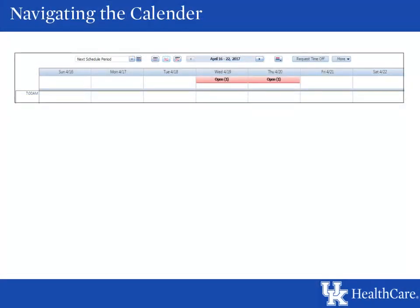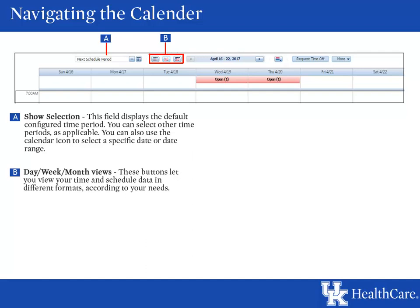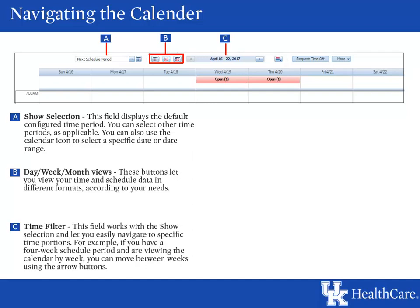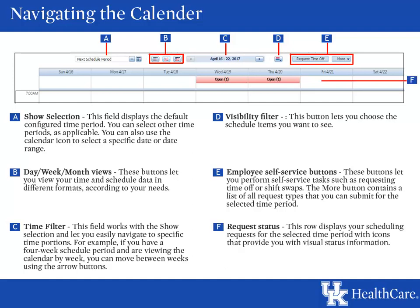We will now walk you through navigating your calendar. Section A is the field that displays the default time period — you can select other time periods from the pull-down list or use the calendar button to select a specific date or date range. The icons in Section B are your day, week, and month views. In Section C, use the arrow buttons to move between time periods. You can also use the visibility filter, represented by the letter D, to choose what schedule items you want to see. The Section E buttons are your employee self-service buttons, allowing you to perform tasks such as time off requests and shift swaps. The More button contains all request types for the selected time period. The request status row displays your scheduling requests with icons that provide visual status information.